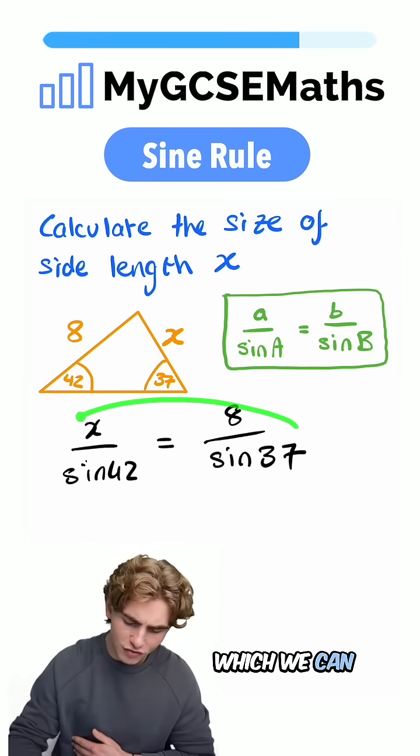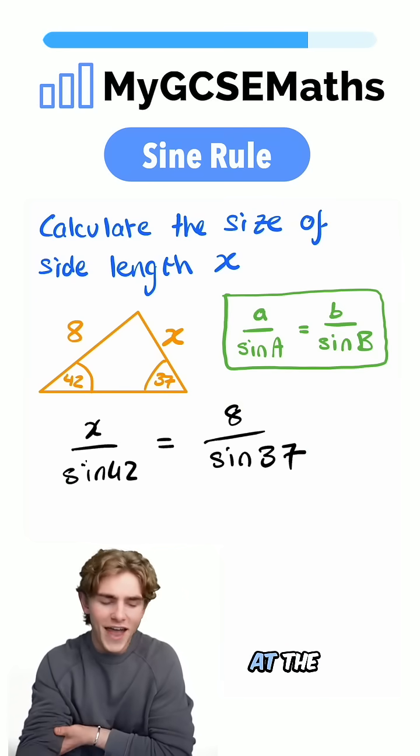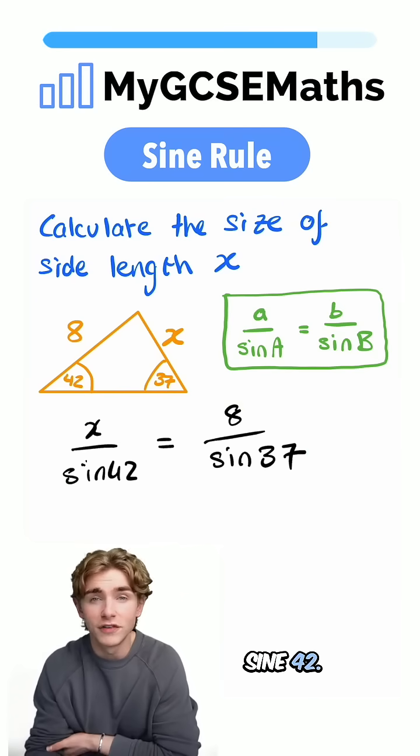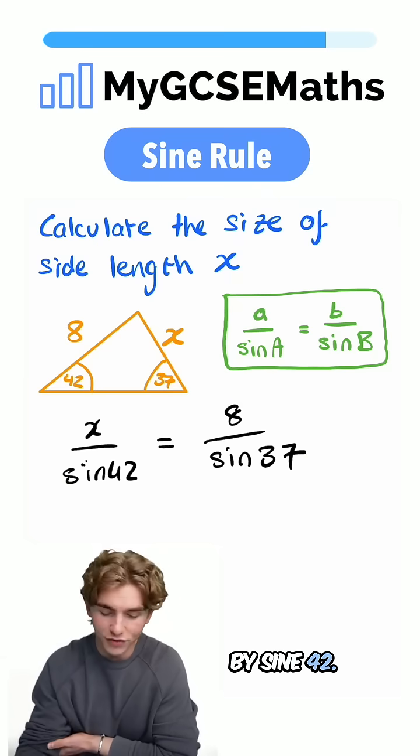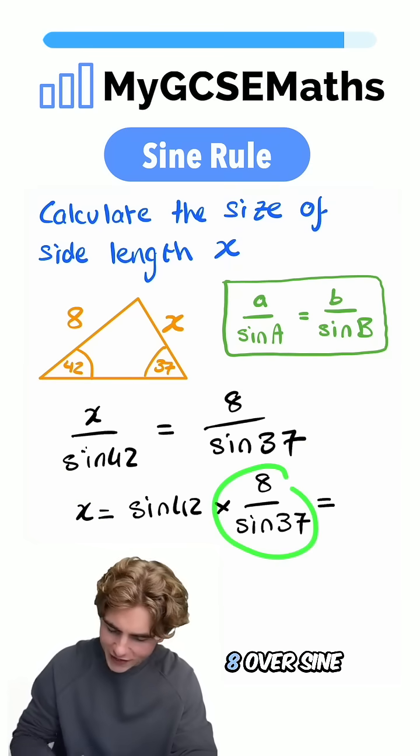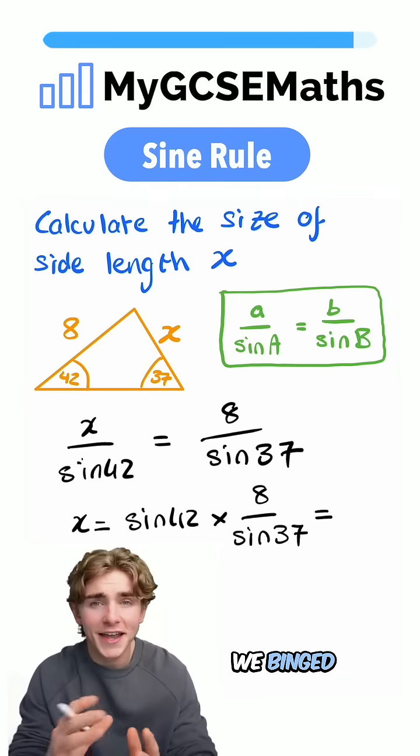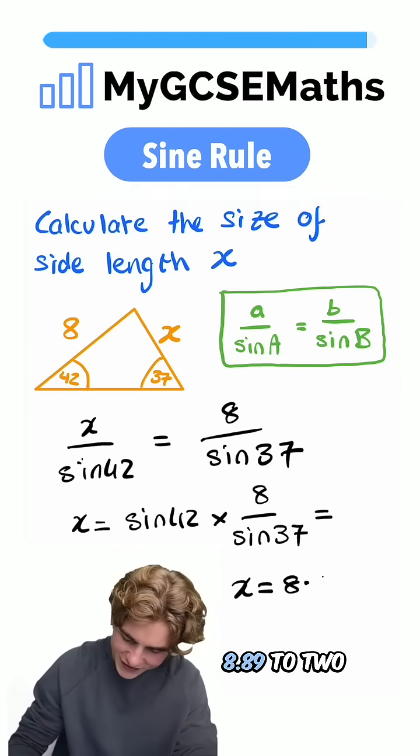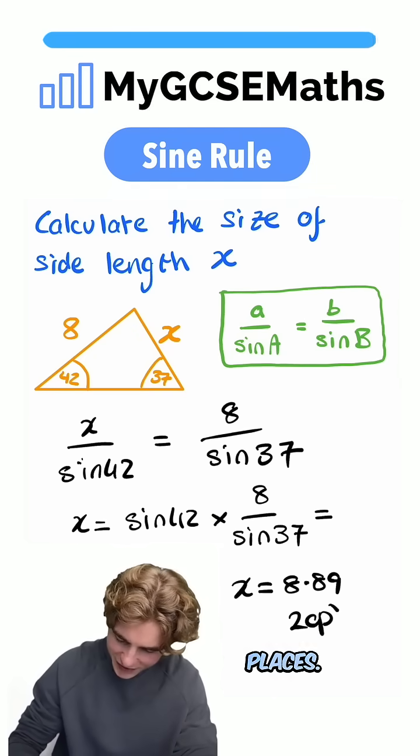Now this is an equation which we can rearrange to find the value of x. At the moment, x is being divided by sine 42, so we multiply both sides by sine 42. If we did that, we would get x equals sine 42 times by 8 over sine 37, which if we put into our calculator would give us x equals 8.89 to two decimal places.